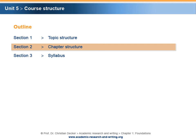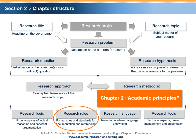Section 2 – Chapter Structure. In Chapter 2, research rules or, more specifically, academic principles are addressed. Five major principles are introduced and broken down into sub-principles that provide general guidance while performing research.